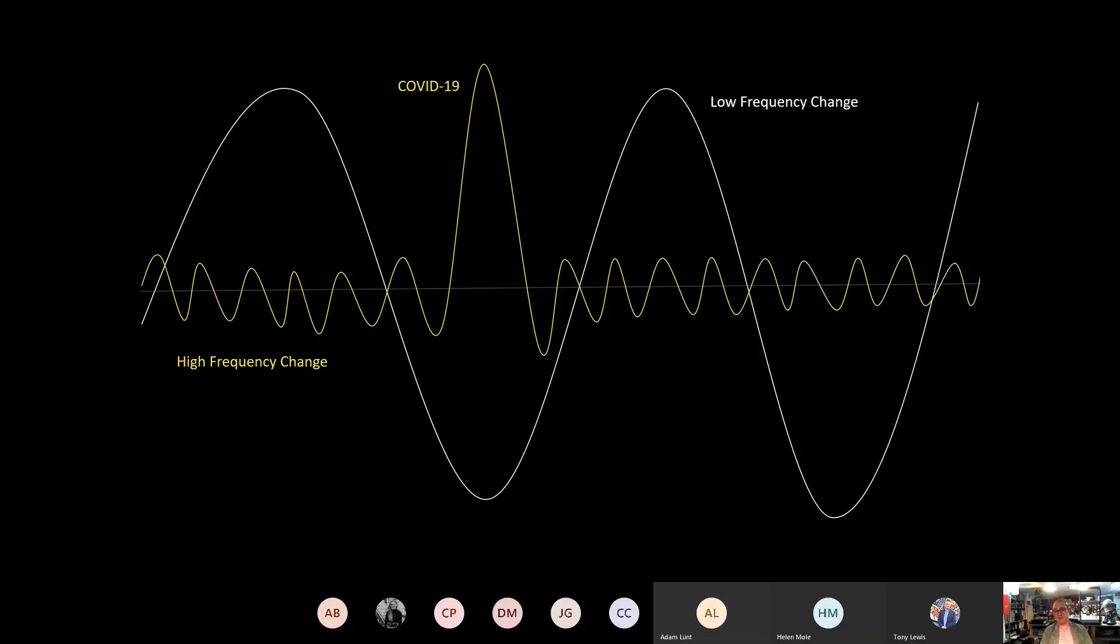And then sales collapsed again three months later when two of them blew up and burned someone's house down and the British government told everyone that they're illegal to ride on the roads. That's a really good example of a high frequency change.